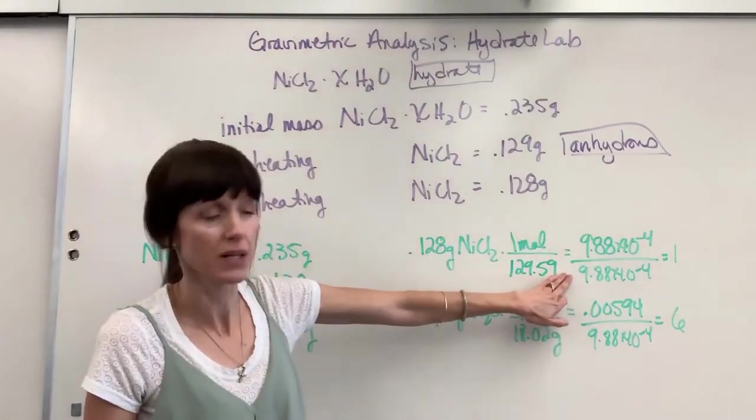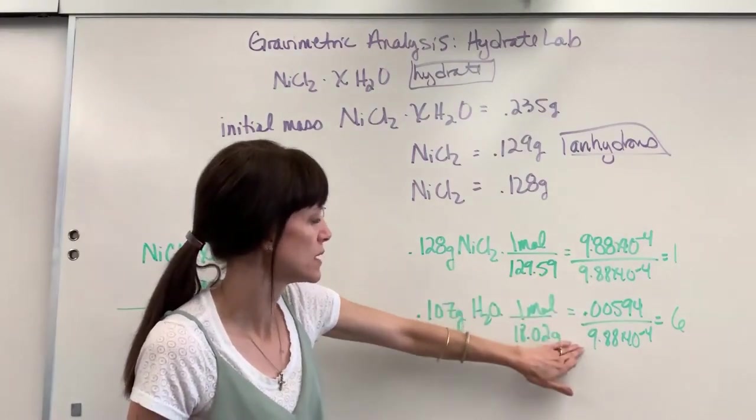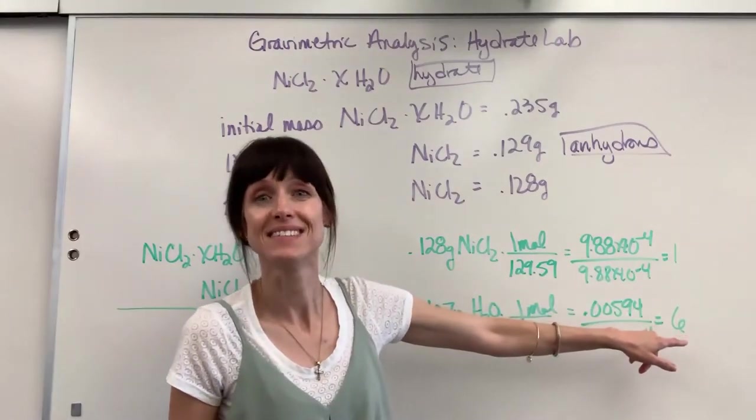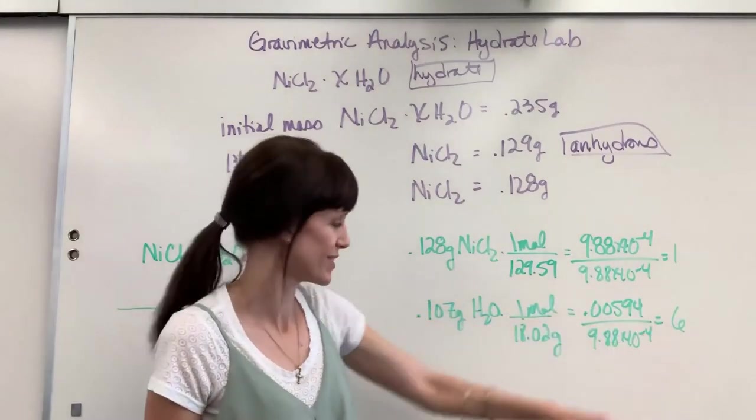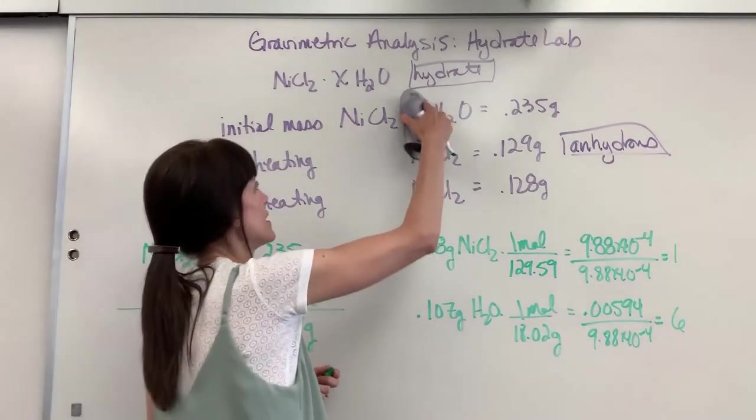Here the nickel chloride is the smallest mole. The 9.88 times 10 to the minus 4, divide both of these, and you end up with one nickel chloride and six water molecules. So we have an answer that goes right here.